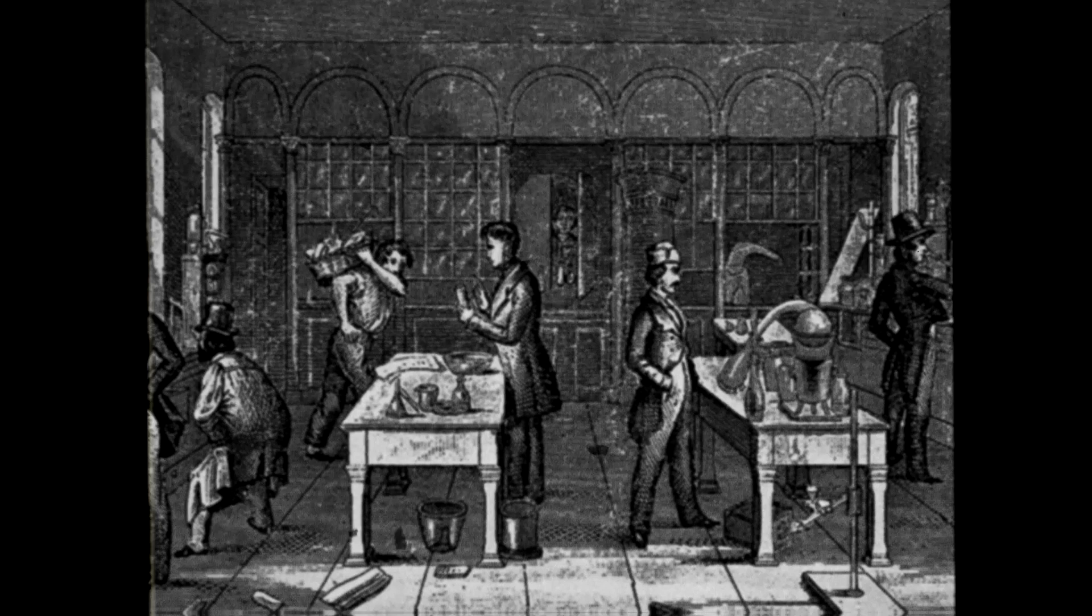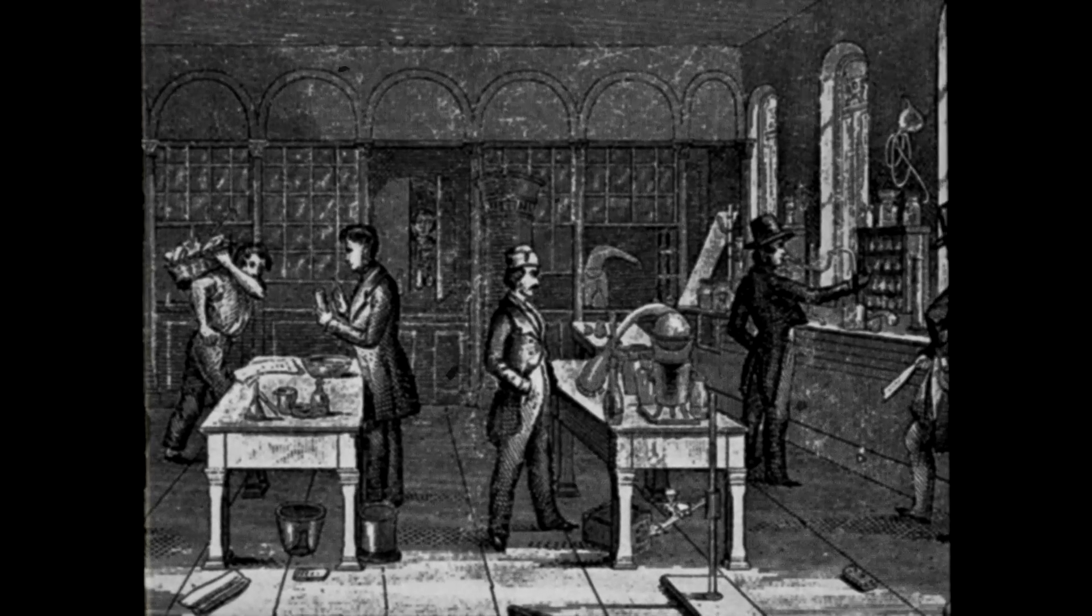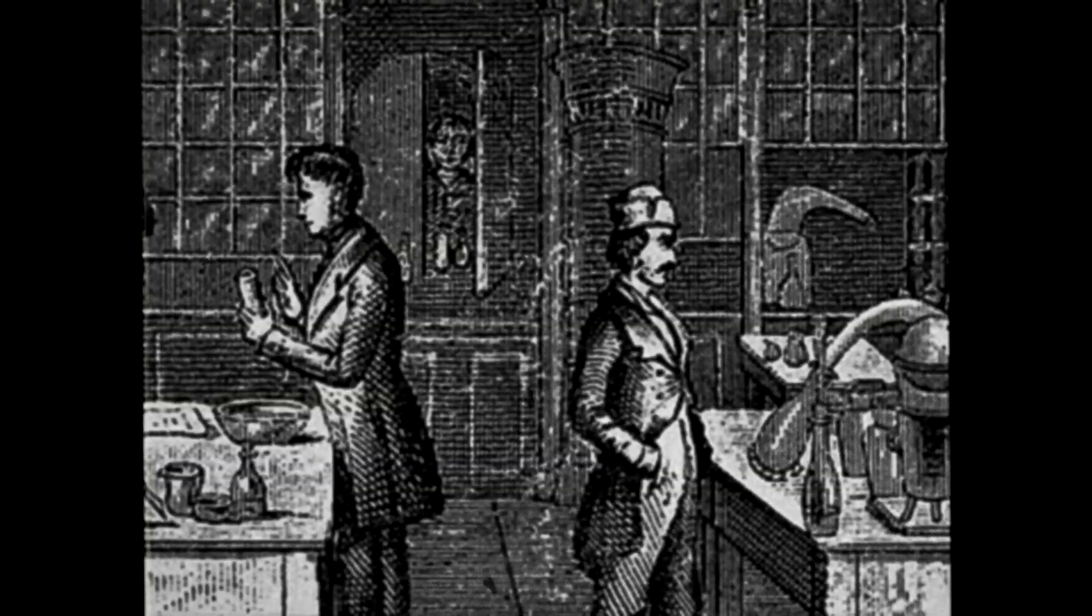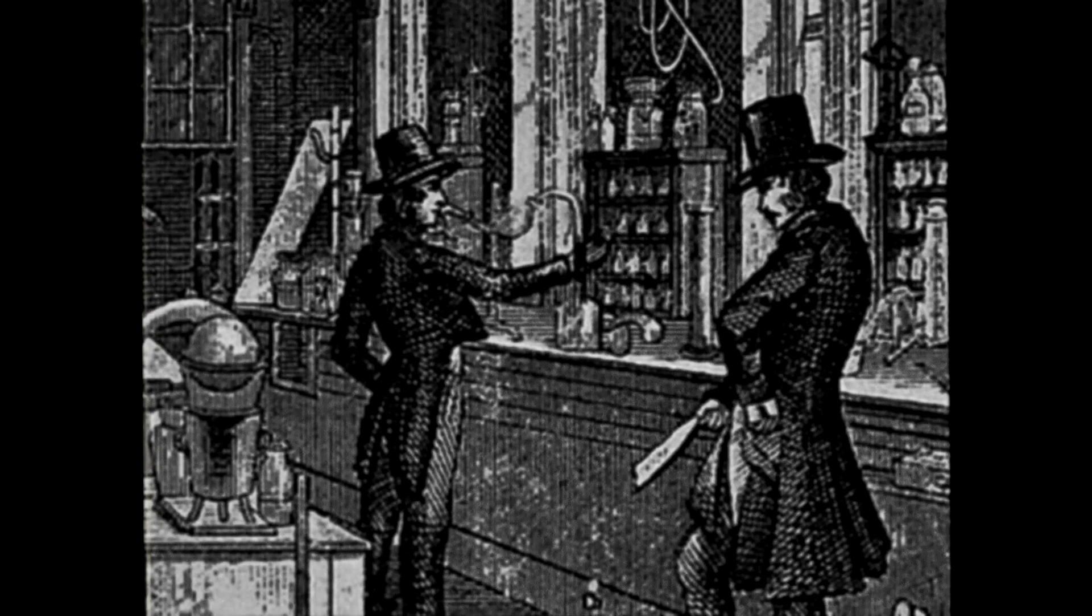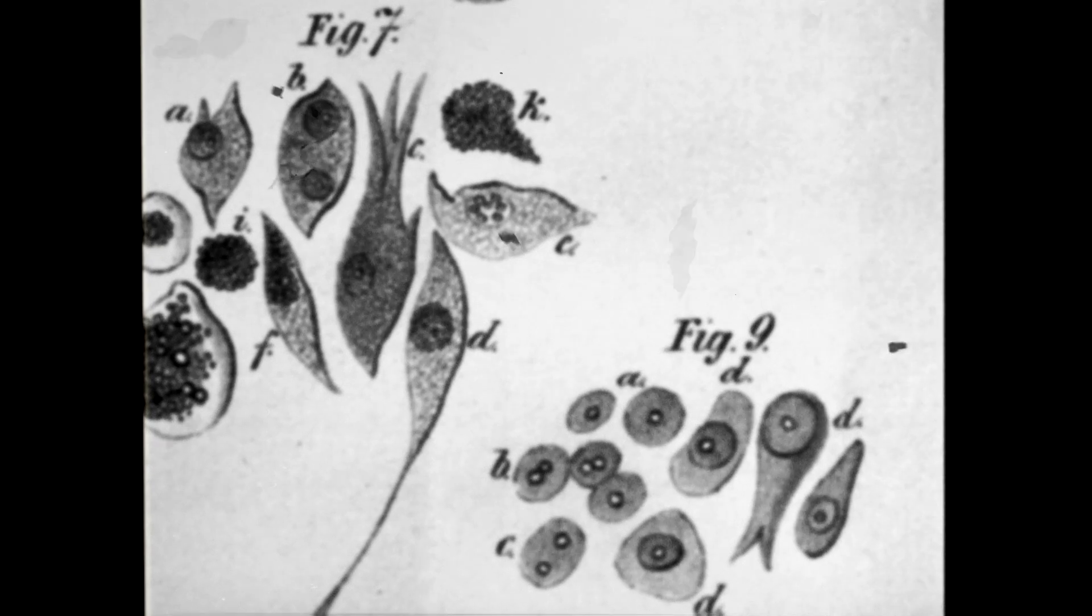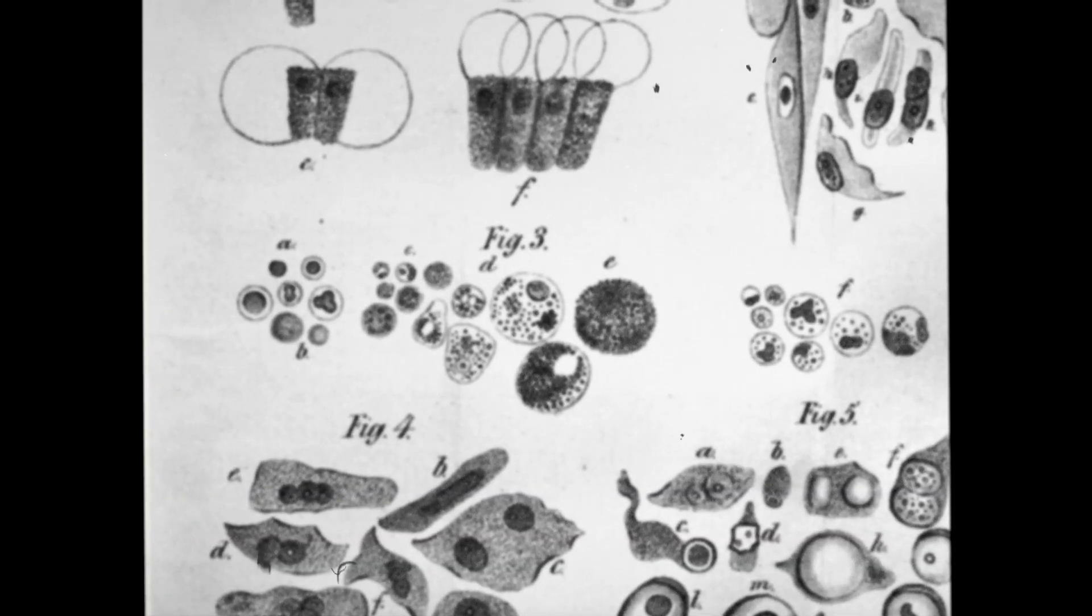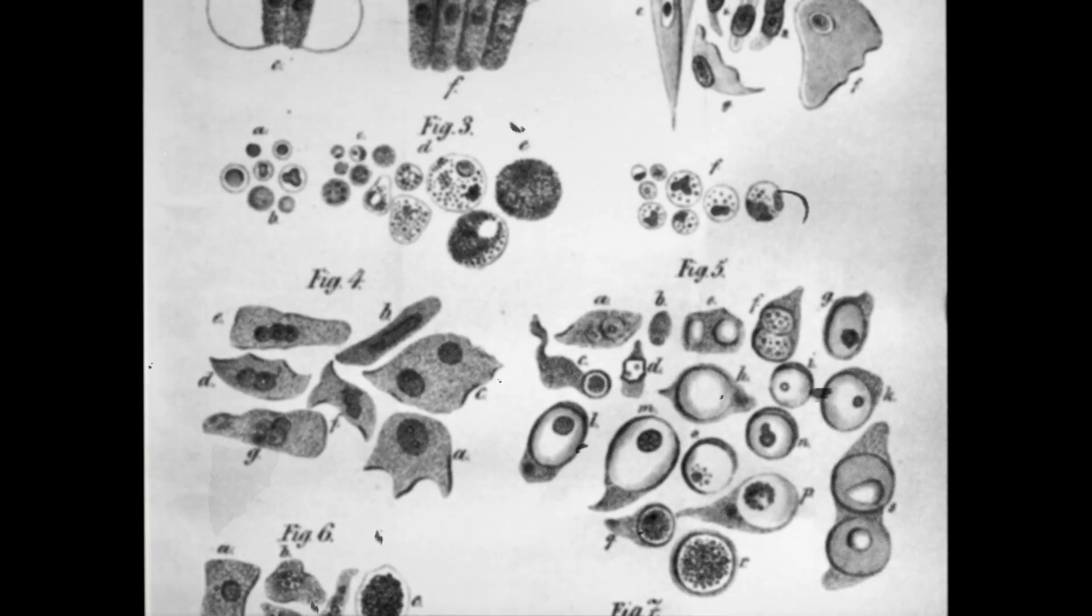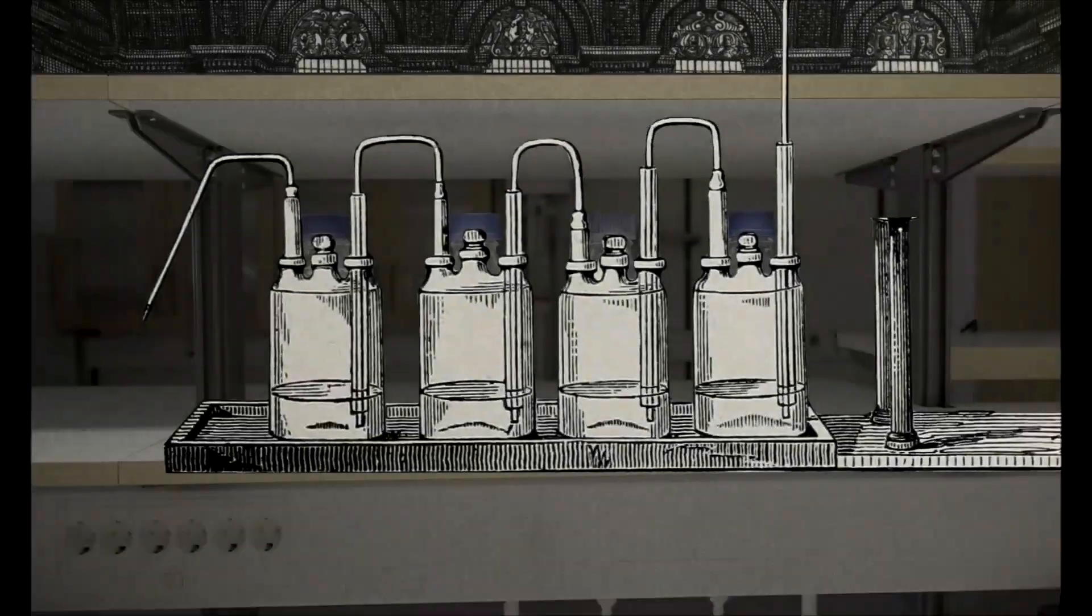Scientists have struggled to understand and beat blood cancer for nearly 200 years. It began when doctors discovered patients with what they called milky blood. And when they looked at the blood under a microscope, one could see that it contained too few red blood cells. At the same time, there was an abundance of white blood cells. But they weren't working as they should. They were the result of cancerous stem cells. The German doctor Rudolf Virchow named the disease leukemia, white blood.